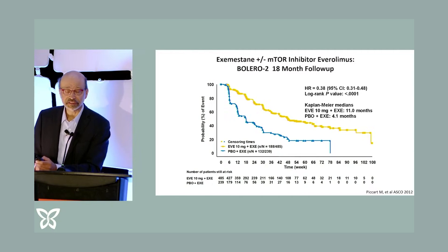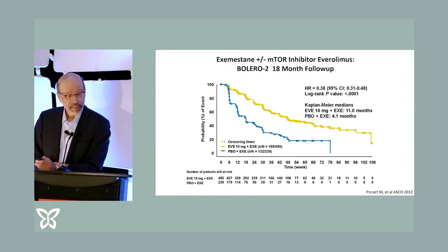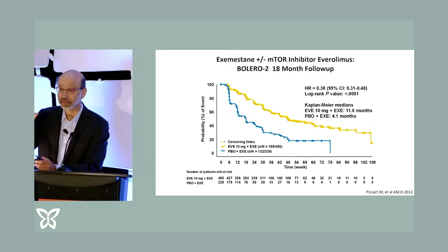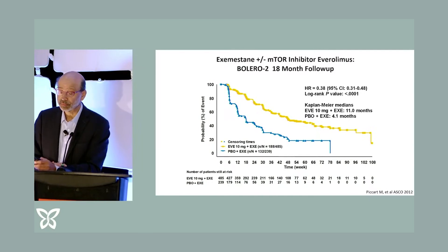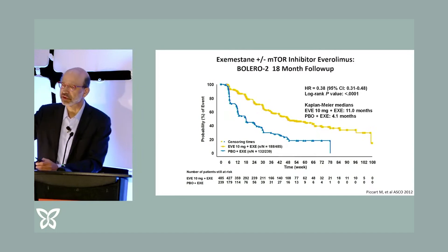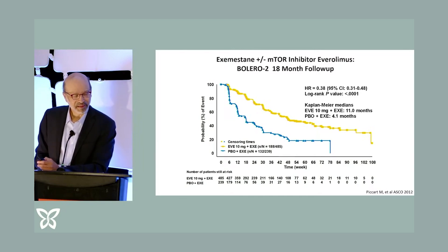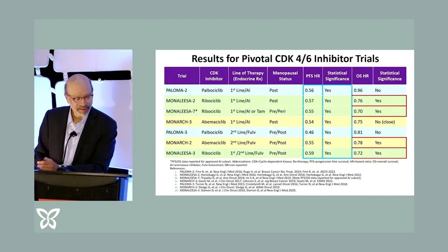mTOR is a part of the growth factor pathway, and blocking it with a drug called everolimus can improve outcome. These progression-free survival curves show how long people go without progressing — when the curve is higher, the drug is more effective. In this case it doubled the time to progression. We need to push these PFS curves out further with newer drugs, and we want to see the upper curve become almost a horizontal line. That's what we're aiming for, and we're getting there slowly.